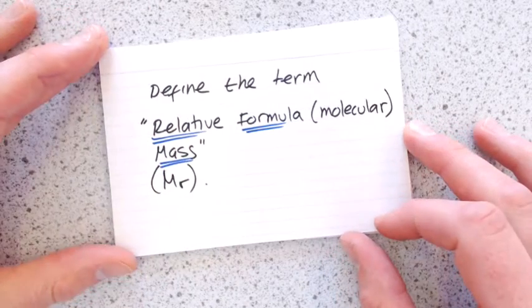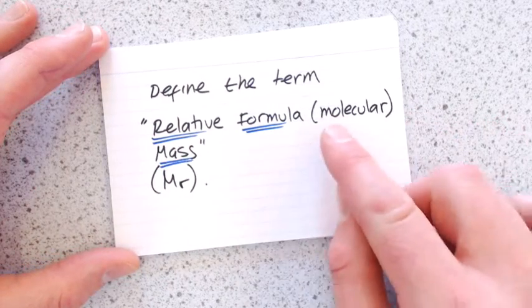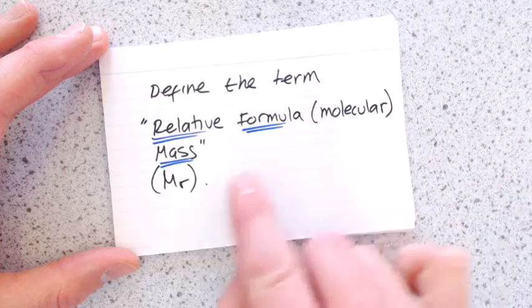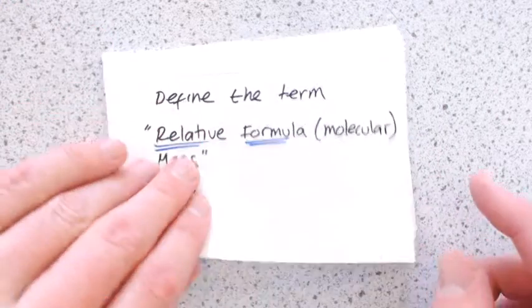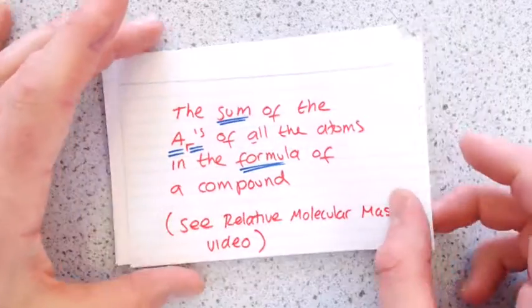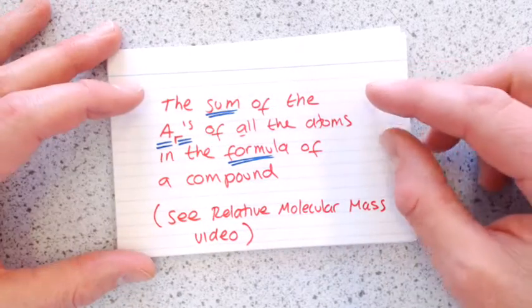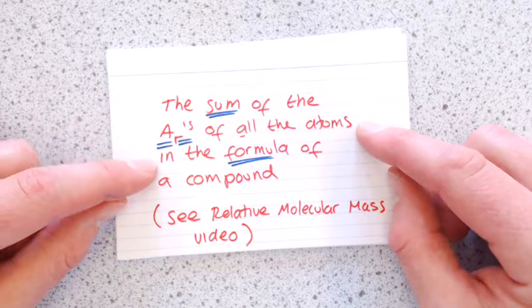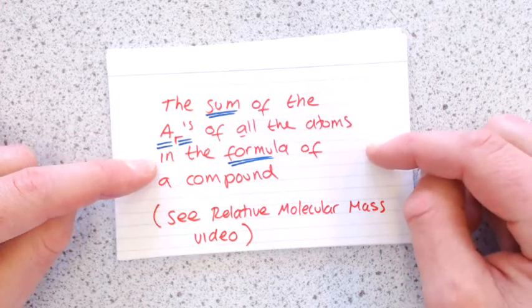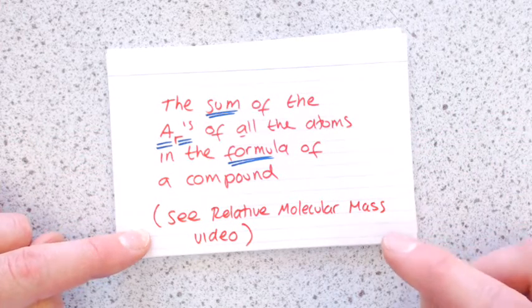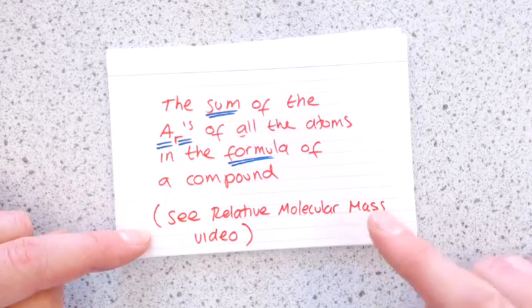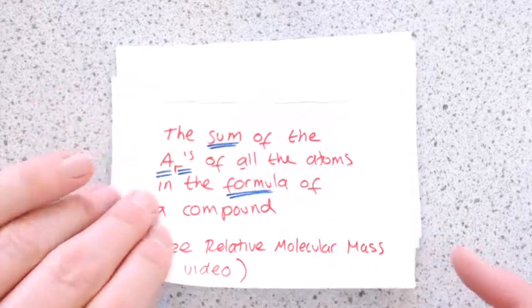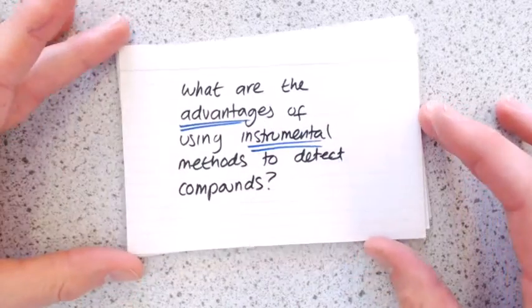Define the term relative formula mass. Sometimes this would be called relative molecular mass, and it's given a shorthand MR. This is the sum of all the atomic masses of the atoms given the formula of a compound. I've made a video tutorial on this called relative molecular mass that shows you how to work through those. So I won't do that here.